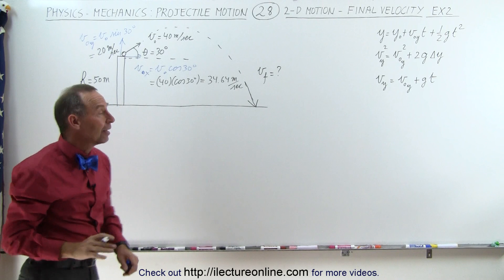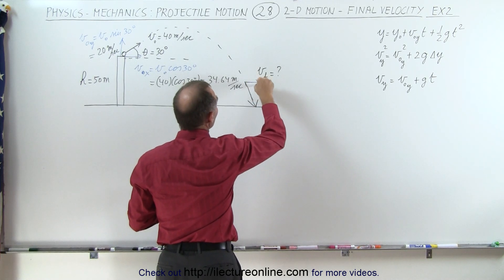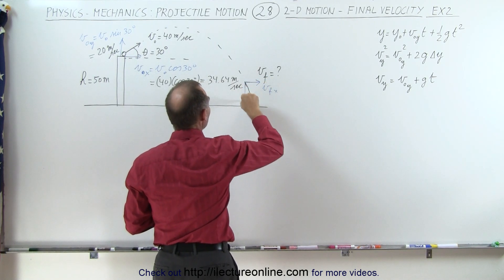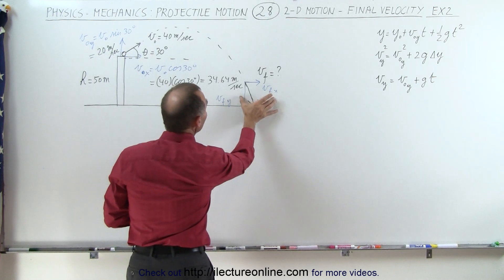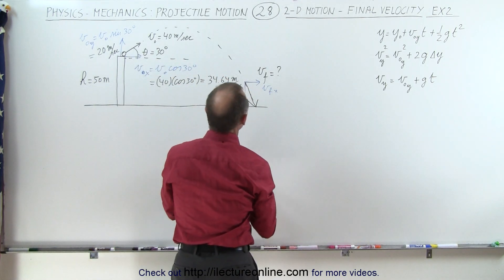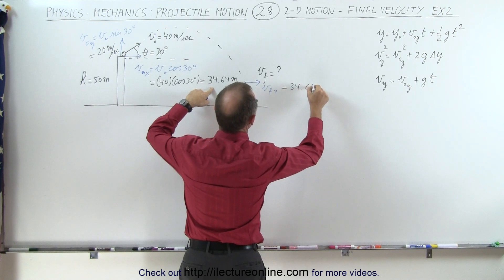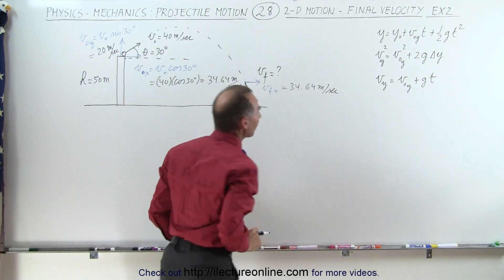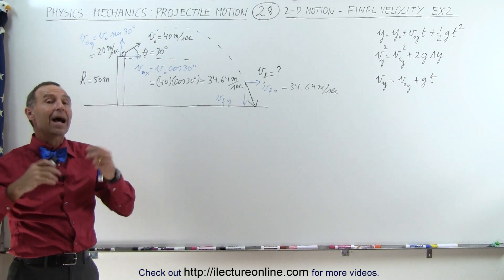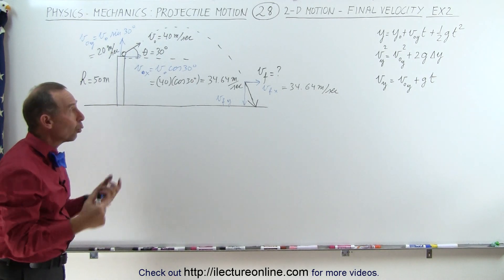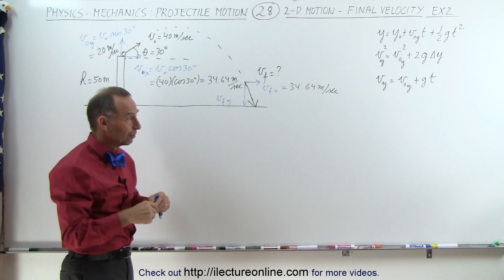Now that we have the initial velocities, we can find the final velocity. The horizontal component at the end will be exactly the same as at the beginning — v_final in x is still 34.64 meters per second. For the vertical component, we can either find time first, or use the kinematic equation to solve for v_final in y directly without knowing time.